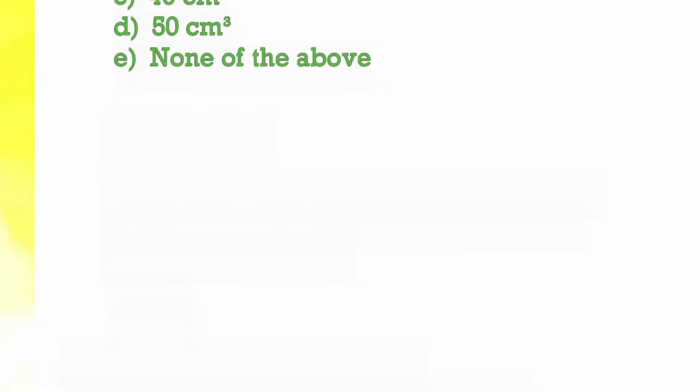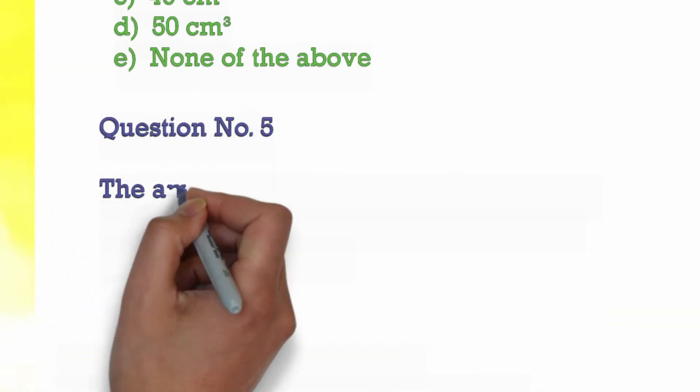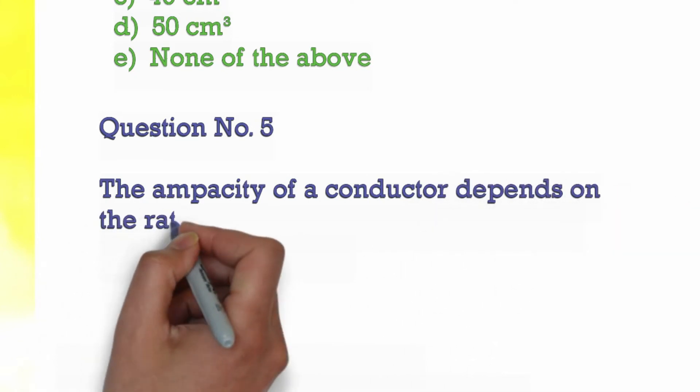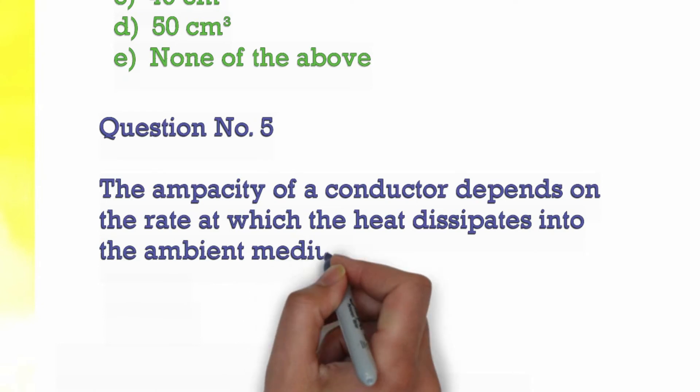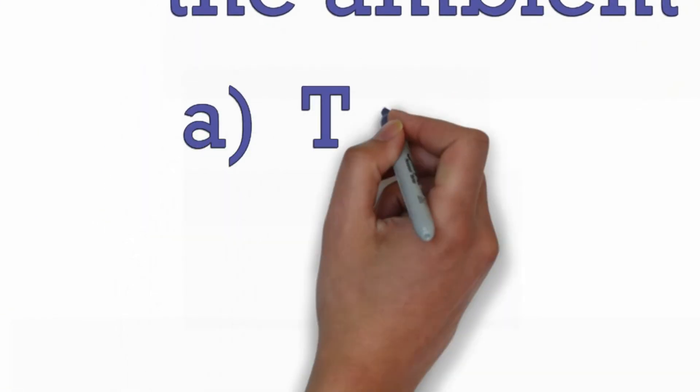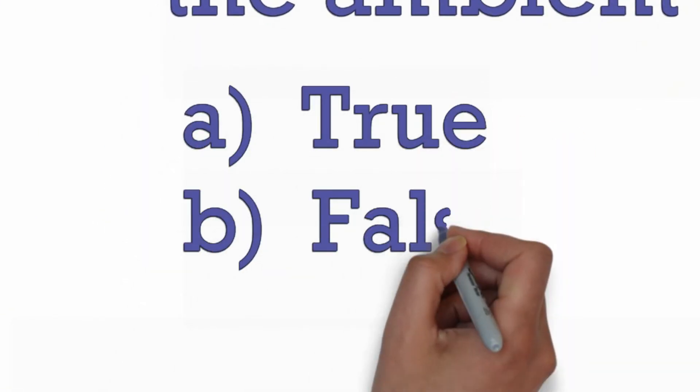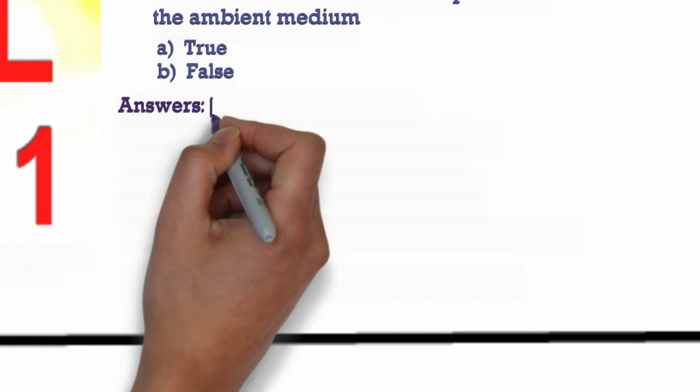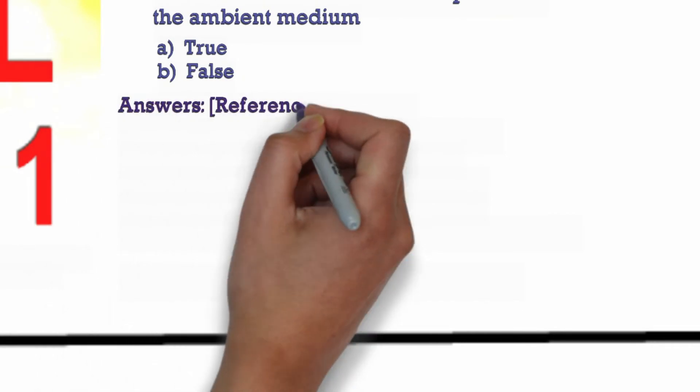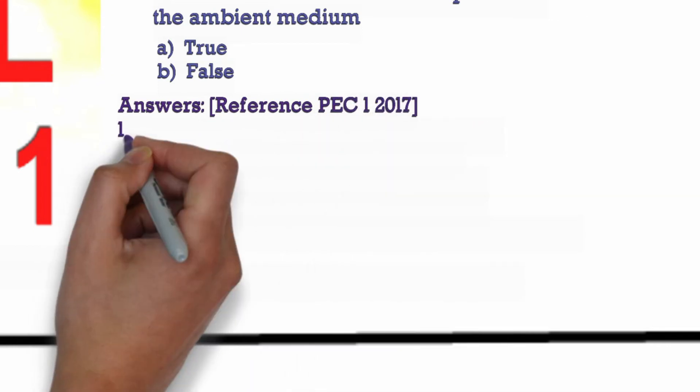Question Number 5: The ampacity of a conductor depends on the rate at which the heat dissipates into the ambient medium. A. True, B. False. Answers: Reference Philippine Electrical Code Part 1 2017.